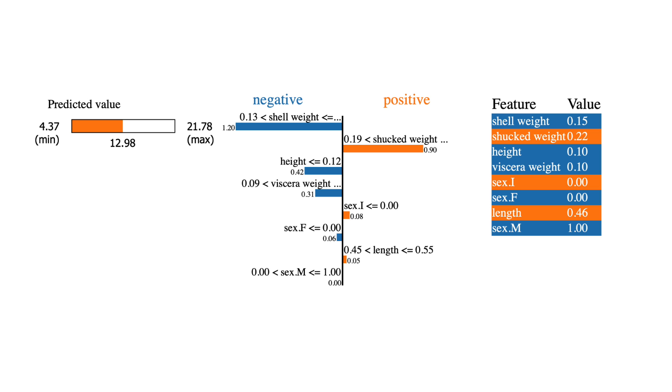LIME is a popular method for understanding the individual predictions made by a model. We can use it to answer questions like: why was their loan application rejected, or why did we accept this candidate for the job? But if we are not careful, LIME can easily give us misleading answers for these questions.